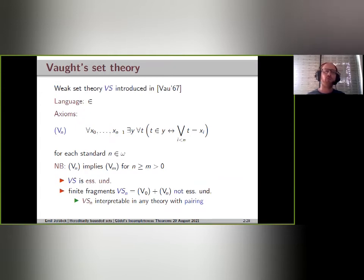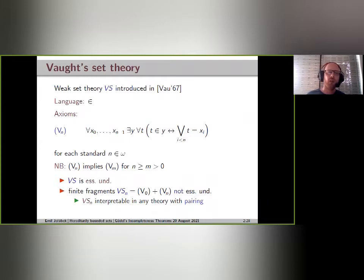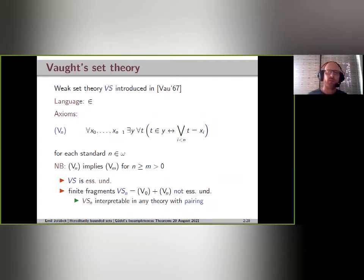Since we are looking for as minimal a theory as possible, it is a natural question whether we can make do with a finite fragment of Vaught's set theory and still have essential undecidability. It turns out we cannot, because all finite fragments of this theory are not essentially undecidable — they have decidable extensions.